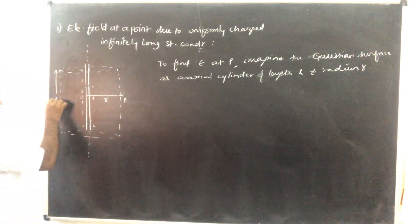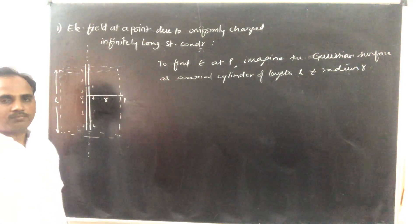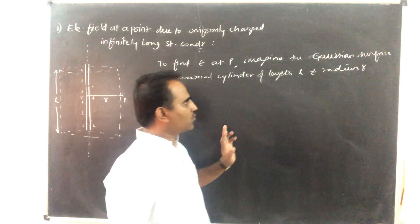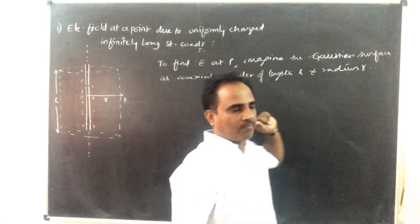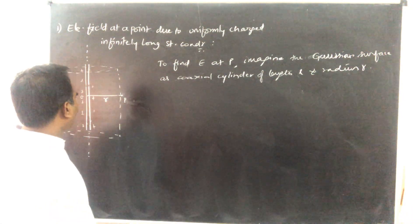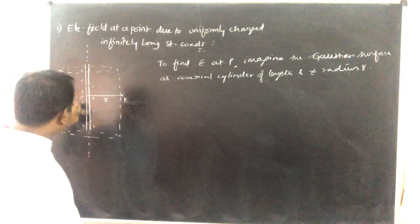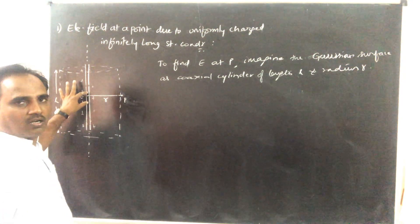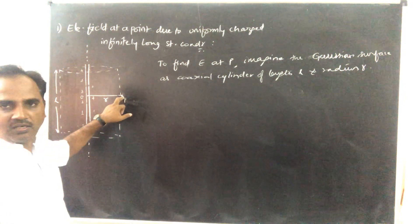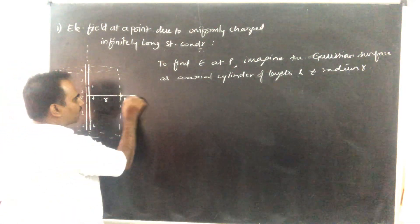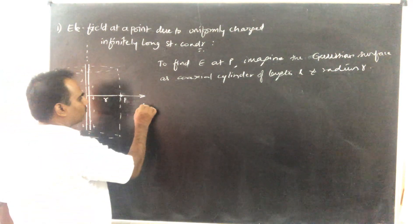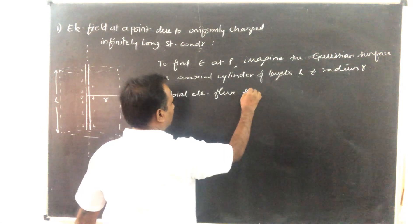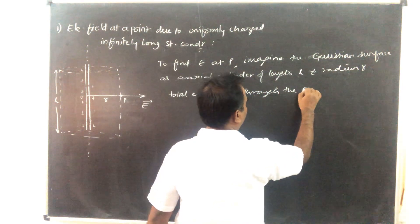The Gaussian surface has length L and radius R. The electric intensity is the same at every point on the curved surface of the Gaussian cylinder. Already we found the electric field direction to be radially outwards. Now we shall find the total electric flux through the Gaussian surface.